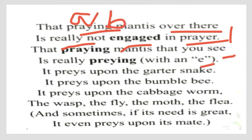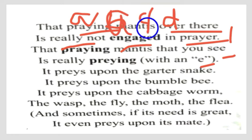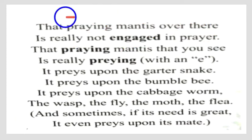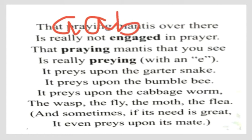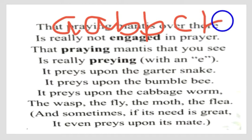The rhyme scheme of this poem is A, A, B, B, C, B. 'There' and 'prayer' rhyme as A; 'snake' and another word rhyme as B; and 'C' forms the third rhyme pattern. Let me write this once again: A, A, B, B, C, B — this is the rhyme scheme of the poem.